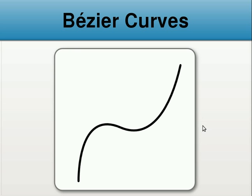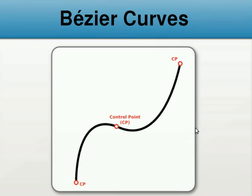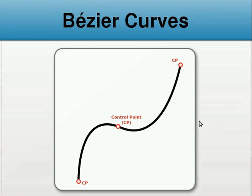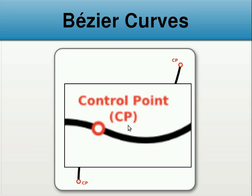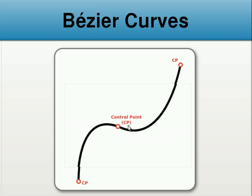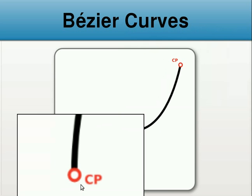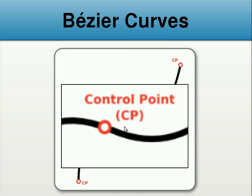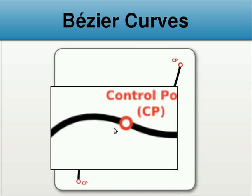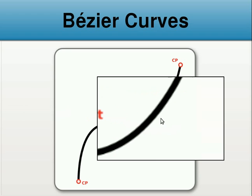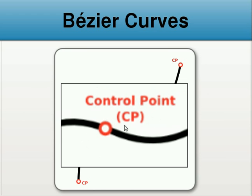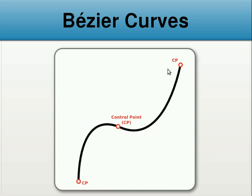We are going to add, in some very special places, some special points which we will call control points, or CPs. These points mark some places the curve must go through exactly. For example, the place the curve starts at the bottom, the place the curve changes its shape, and the place where the curve ends. So there are three points the curve must go through all of them.